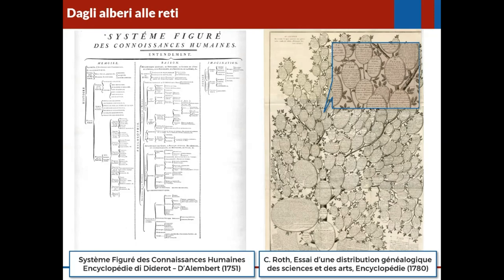E questo è andato avanti fino al 1700. Qui vediamo due illustrazioni tratte dall'Enciclopedia: quella sulla sinistra della prima edizione dell'Enciclopedia di Diderot e d'Alembert, e quella sulla destra successiva solo di alcuni anni, in cui la rappresentazione delle varie discipline è vista sempre come una ramificazione progressiva. Non a caso parliamo ancora di branche, adesso di settori della conoscenza.